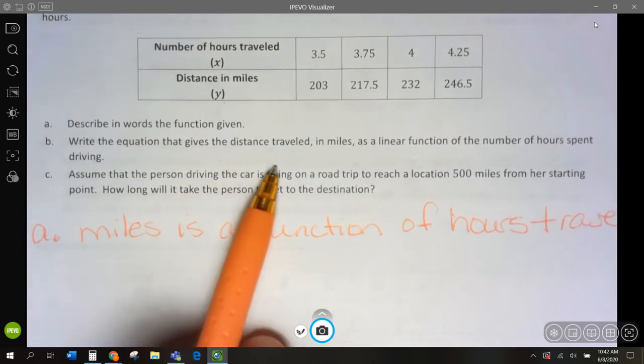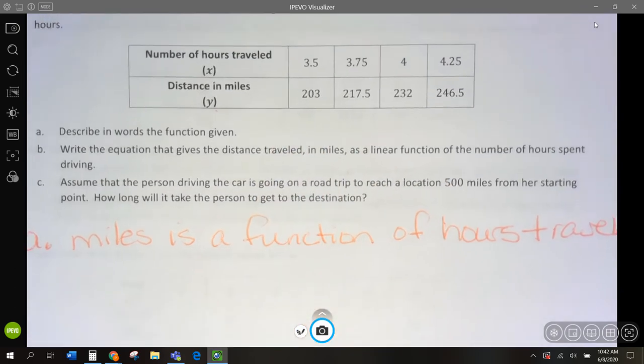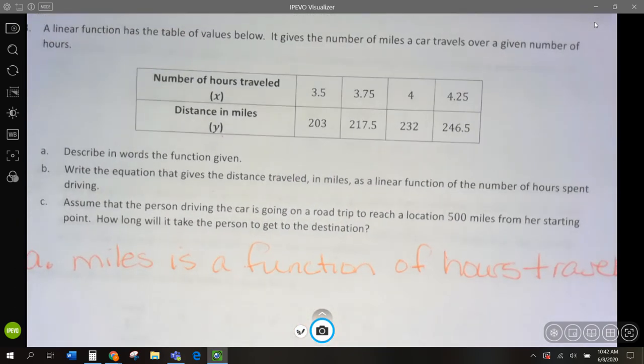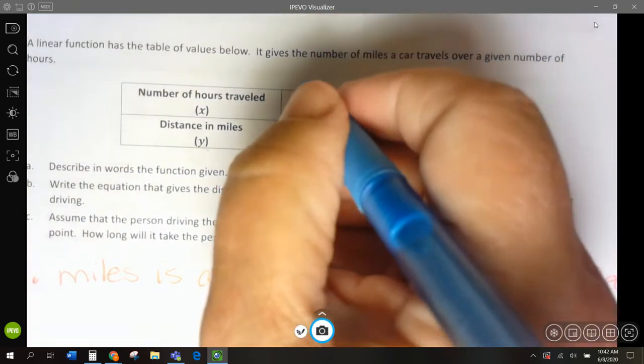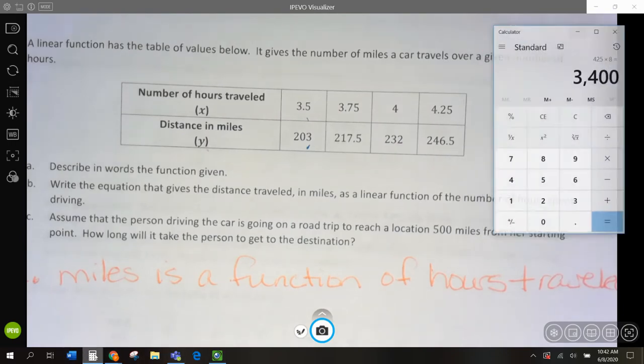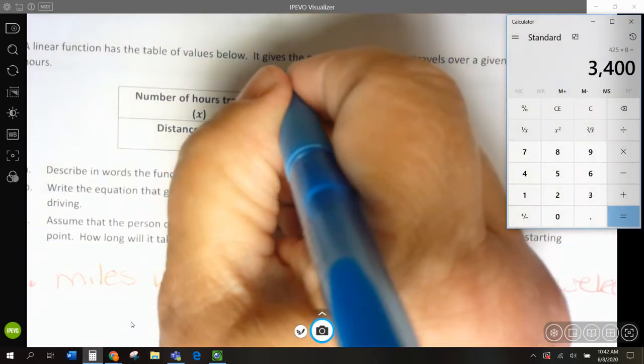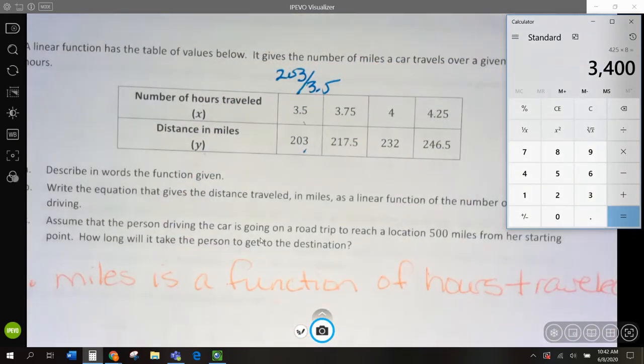Write the equation, so they want us to know what this equation is. So, let's see if we have a constant rate, 203 divided by 3.5. Let's try 203, divided by 3.5, 58.